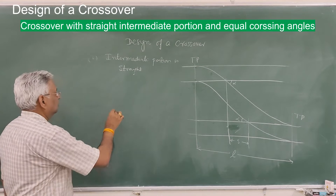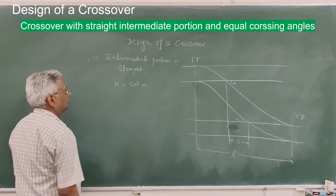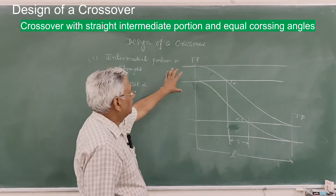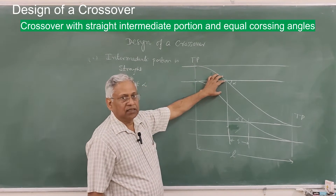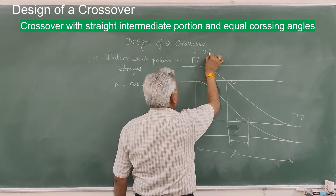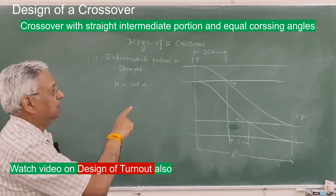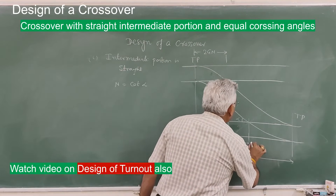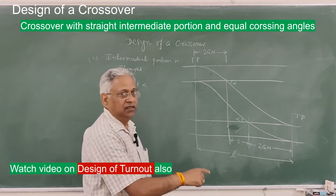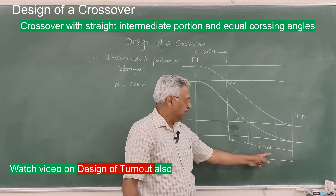Alpha is given by the equation cot alpha = N, where N is the number of crossing. As discussed in the last session on turnout design, the curve lead is 2GN — and you should refer to that session to understand why. This side is also 2GN, where G is the gauge and N is the number of crossing.